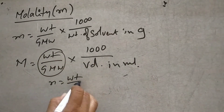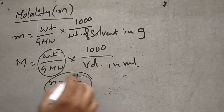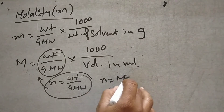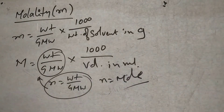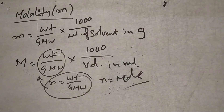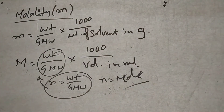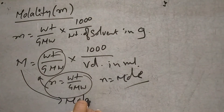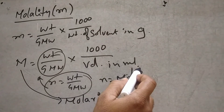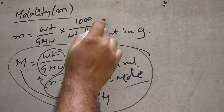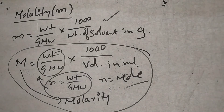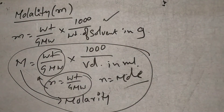Number of moles N is equal to weight divided by gram molecular weight. Molality is denoted by small m. Molality equals weight divided by gram molecular weight, into 1000 divided by weight of solvent in grams. We covered moles in a previous video, and now we are on molality.